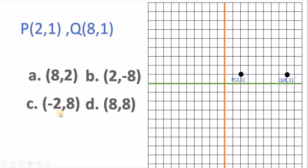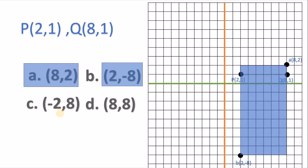First, P is (2,1), Q is (8,1), and the first option is (8,2). Now clearly it forms a rectangle, so it is not the correct answer. In the second case, (2,-8) - plot this. It will also make a rectangle, so it is not also the correct answer.